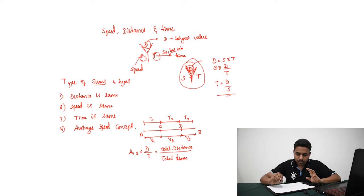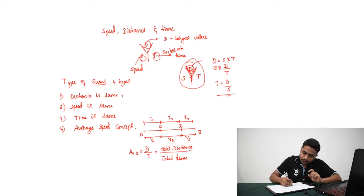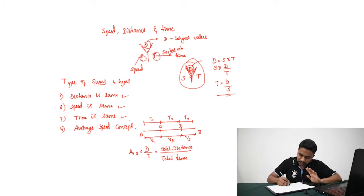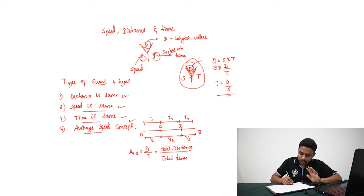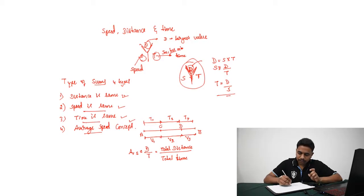In this concept, there are mainly four types of problems. First, when the distance is same. Second, when the speed is same. Third, when the time is same. And the fourth type is the average speed concept. In the question, they do not directly state whether distance, speed, or time is same — we need to read the question and understand the situation properly, then infer which type of problem it is.